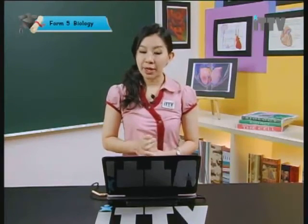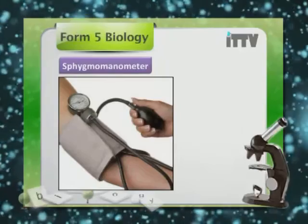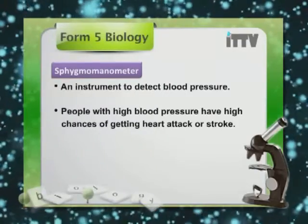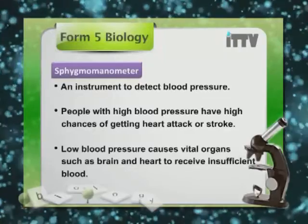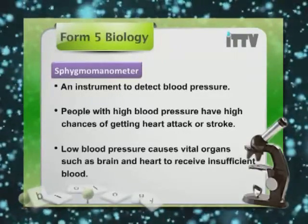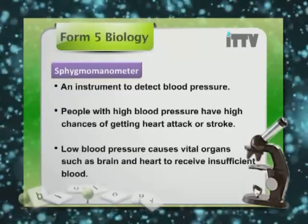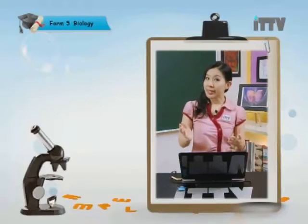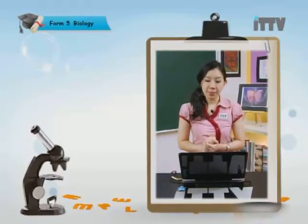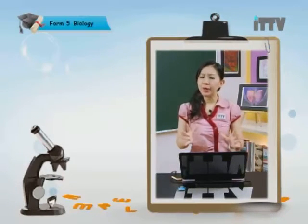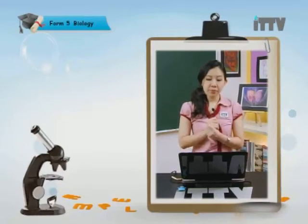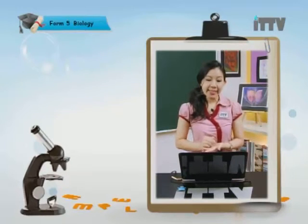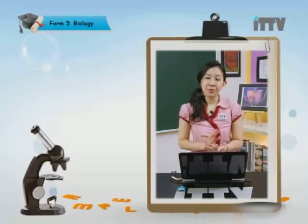A sphygmomanometer is an instrument used to detect blood pressure. People with high blood pressure have higher chances of getting heart attack or stroke. Low blood pressure causes vital organs such as the brain and heart to receive insufficient blood. Normal blood pressure is 120/80 mmHg, and any value above 140/90 mmHg represents a hypertension state, meaning the person has high blood pressure. Any value above 160/95 mmHg is considered very dangerous.